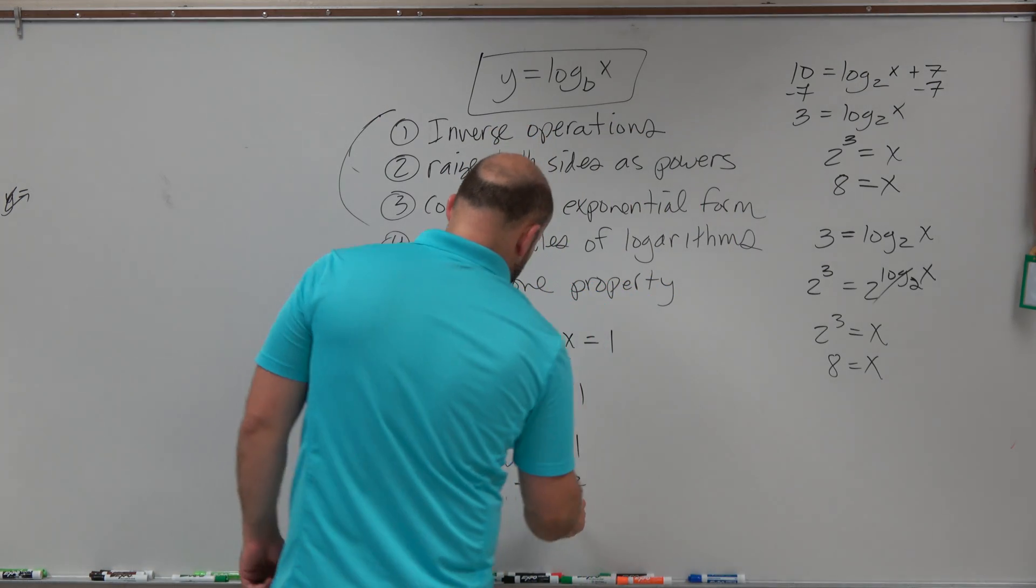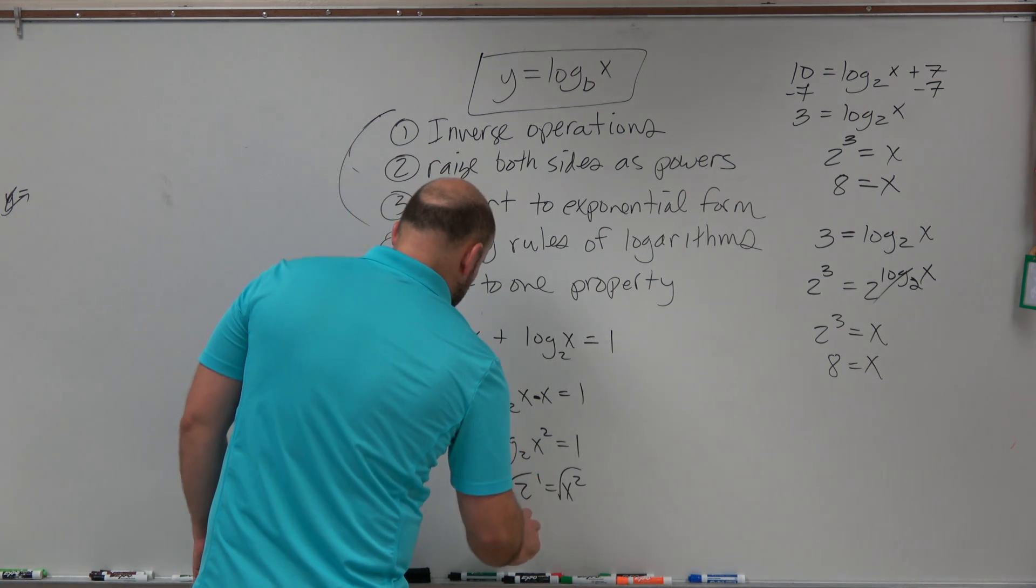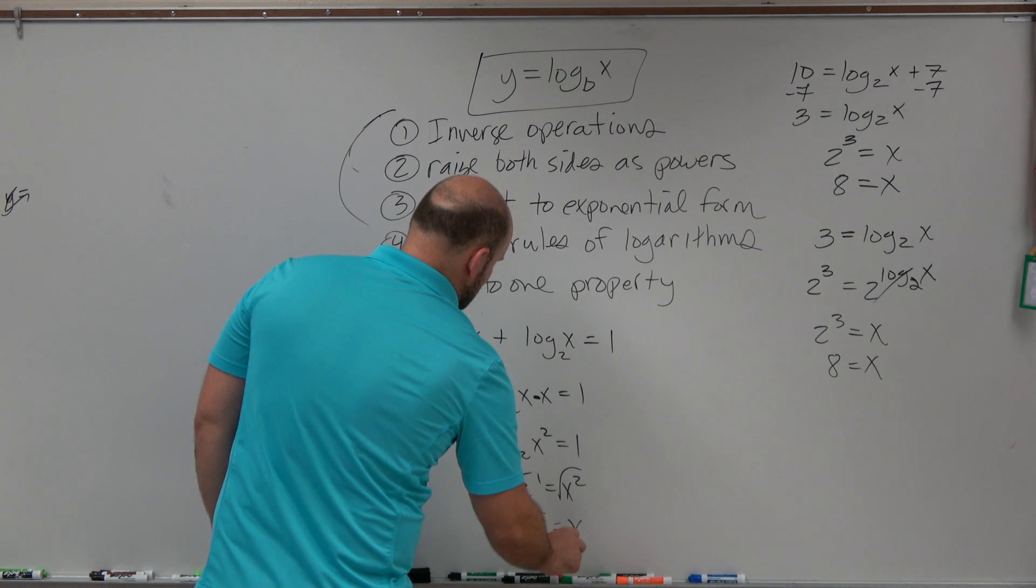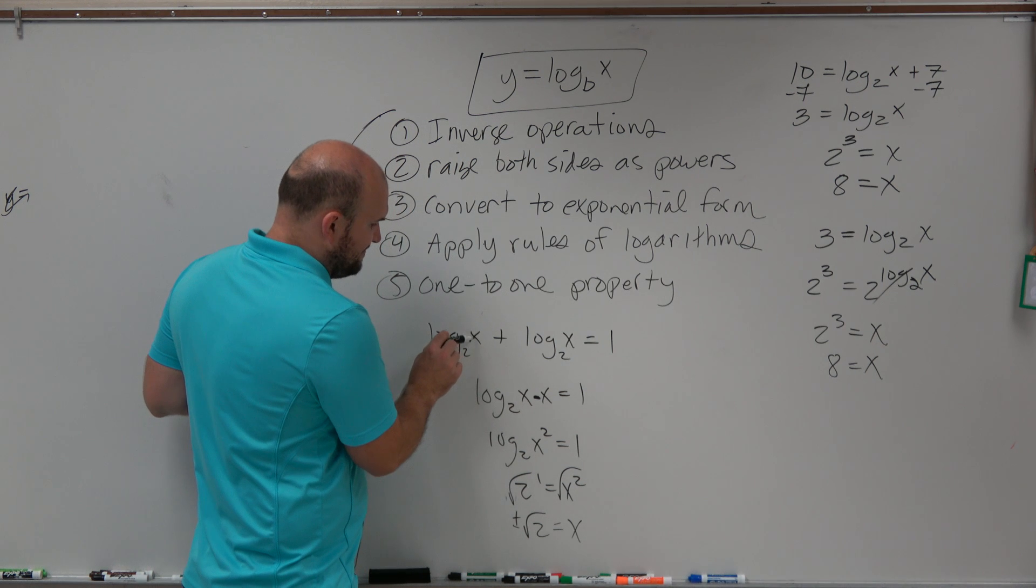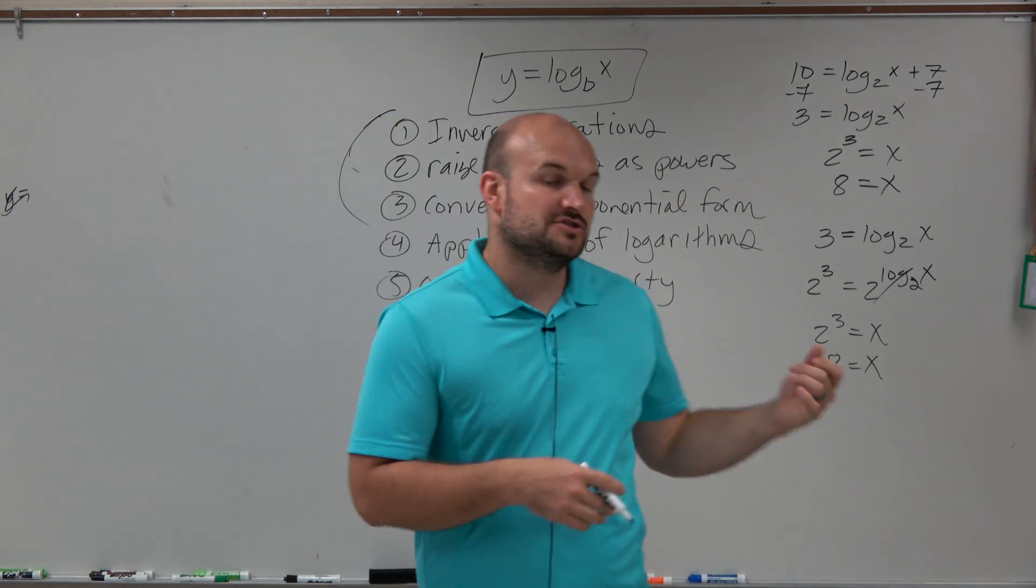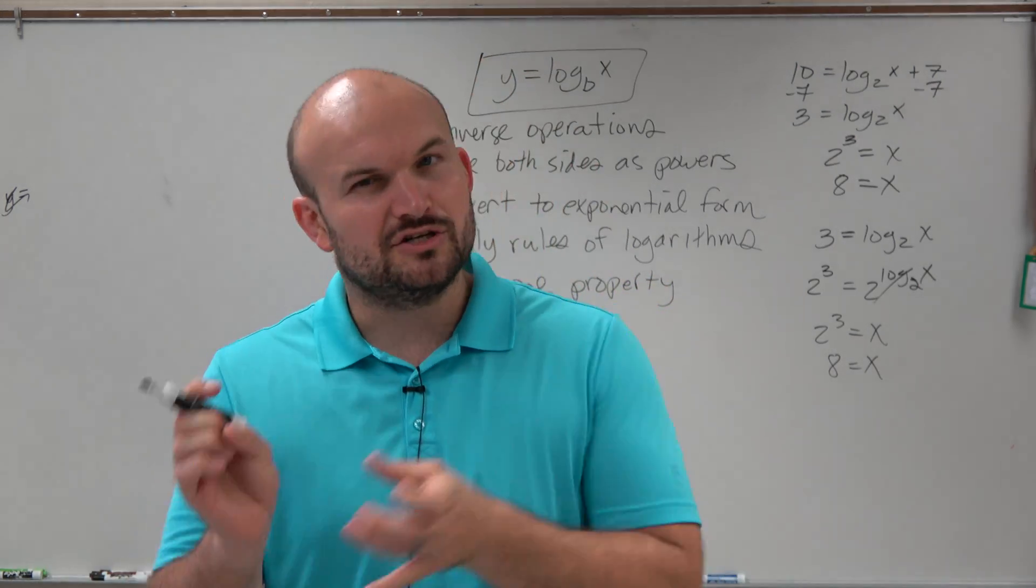Because when we take the square root of both sides, we have plus or minus the square root of 2, right? As equal to x. But we know that we can't have a negative value. You can't raise 2 to some power and get a negative square root. So therefore, this negative square root of 2 would be extraneous.